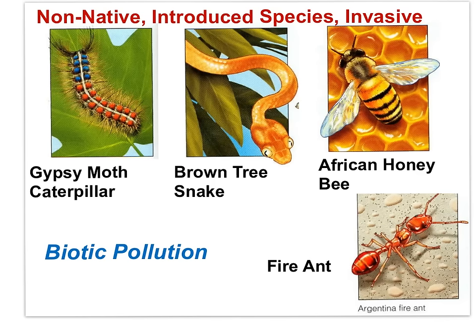Here are some examples of non-native invasive species that have reduced the diversity of the ecosystems into which they've been introduced. The brown tree snake, by way of example, has been introduced to various islands in the Pacific, such as Guam. The snake has spread rapidly without natural biological predators or disease. The brown tree snake has decimated bird populations as it eats the eggs.